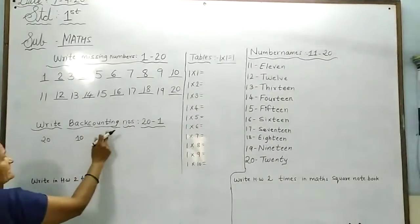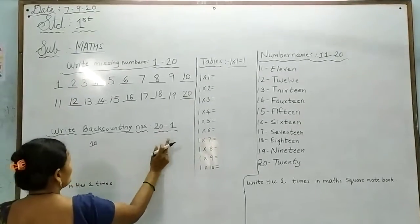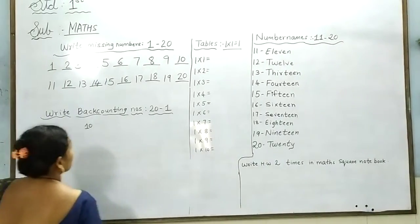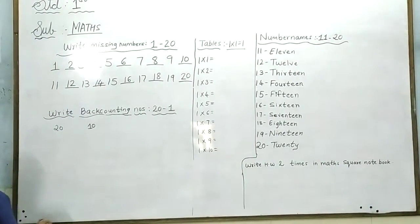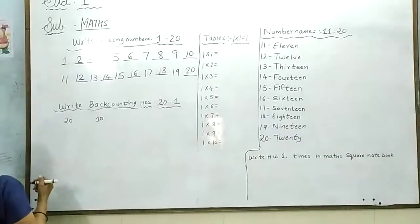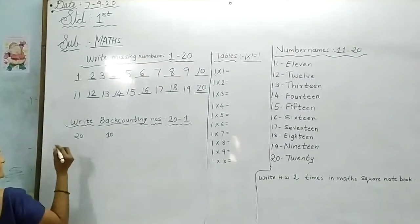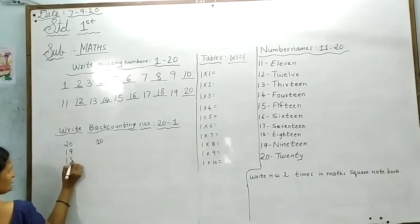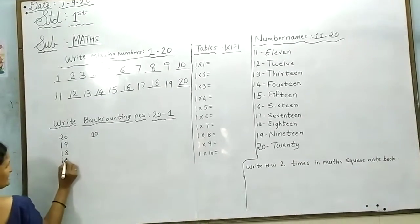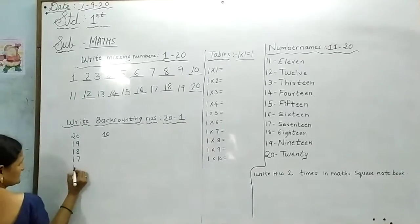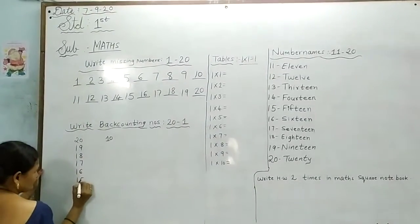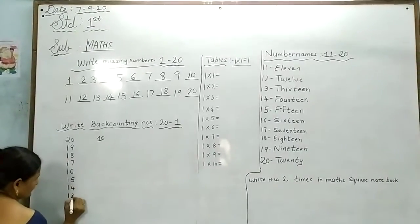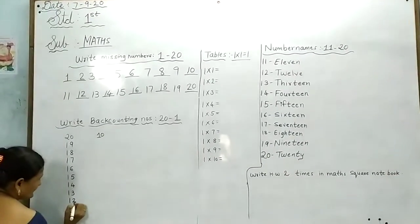20 to 1. 20, 19, 18, 17, 16, 15, 14, 13, 12, 11.